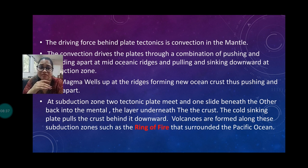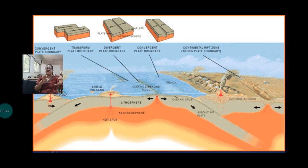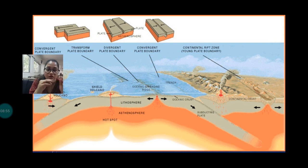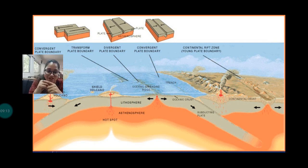For example, surrounding the Pacific Ocean, the volcanic subduction zone is there. That is why volcanic eruptions happen in the Pacific Ring of Fire. A lot of volcanic mountains are there around the Pacific Ocean, and that is why this ring is known as the Pacific Ring of Fire.